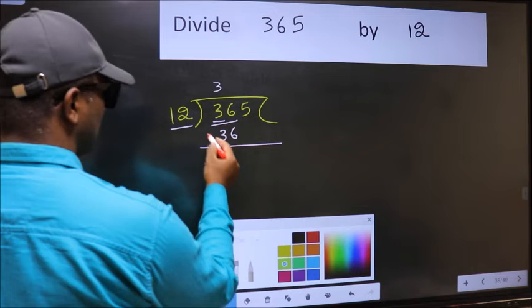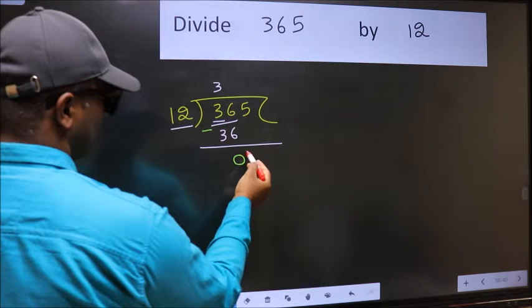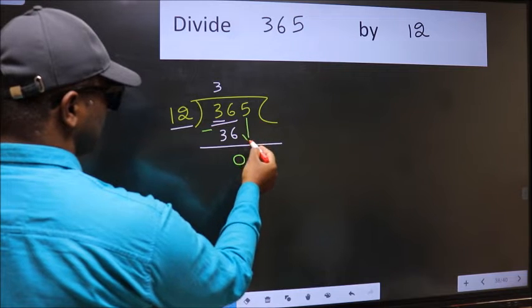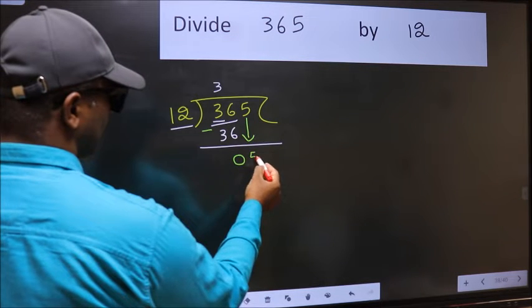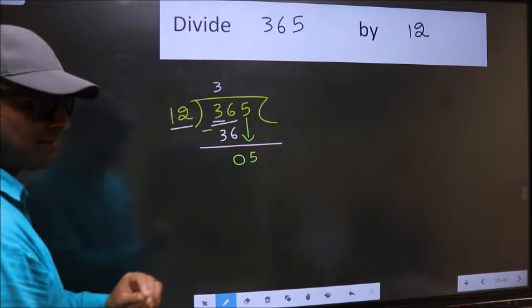Now you should subtract. 36 minus 36, 0. After this, bring down the beside number. So 5 down. After this step, the mistake happens.